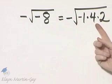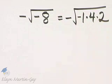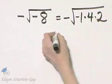Notice negative 1 times 4 times 2, that is still negative 8. I haven't changed anything, but now let's simplify.